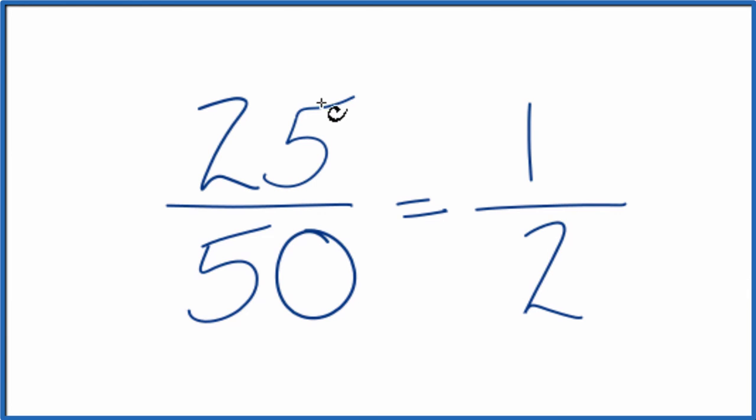The other way you could do this, you could list the factors of 25 and the factors of 50, and then you could find the greatest common factor, which we would find is 25. And then we divide 25 by 25, 50 by 25, and we get one half.